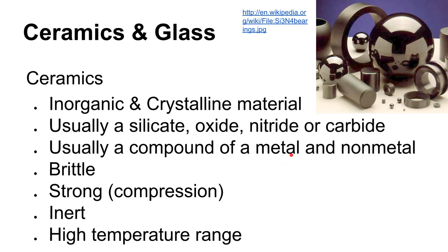Ceramics don't behave as metals because metals are bonded with metallic bonds, whereas ceramic materials typically have ionic bonds. So they won't conduct electricity — even though aluminum oxide has a lot of aluminum in its structure, it's a good insulator. These materials are grouped as silicate ceramics, oxides, and non-oxides — in particular nitrides and carbides. Cubic boron nitride and tungsten carbide are common in machine shop applications.